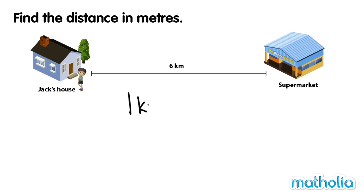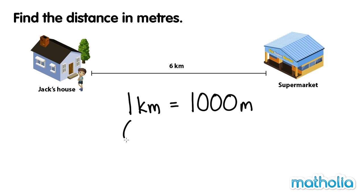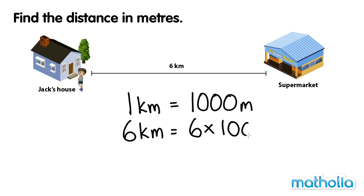We know that in 1 kilometre there are 1000 metres. So, in 6 kilometres there are 6 times 1000 metres. 6 times 1000 equals 6000.